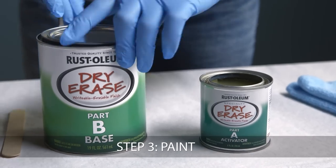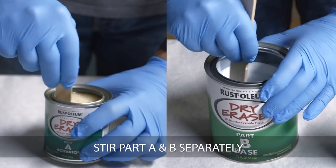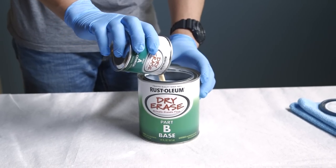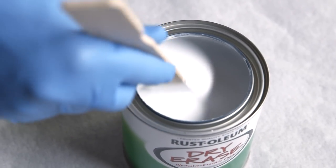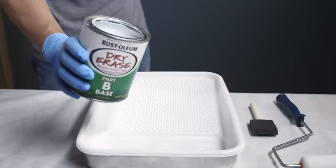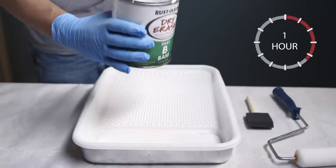Now you're ready to paint. Begin by stirring Part A and Part B separately before mixing. Next, pour Part A into Part B and stir thoroughly until paint is uniform in color. Once mixed, it is important to begin applying dry erase paint immediately so it can be fully applied within one hour of mixing.